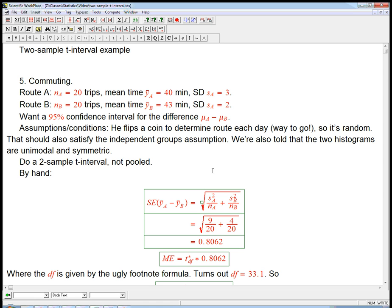Okay, let's do a two-sample t-interval example. This is a book problem about commuting.